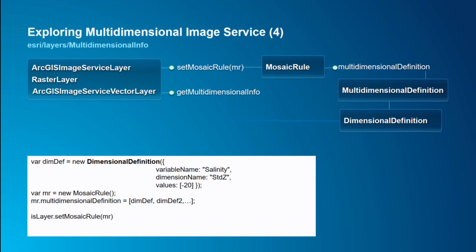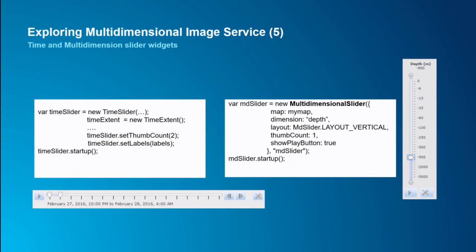The dimensional definition essentially corresponds to one mosaic rule — the image is dynamically mosaicked. You can put multiple dimensional definitions together in an array and assign it to a mosaic rule, then call the layer to set the mosaic rule, instructing the server to draw or process a particular slice or group of slices. There are also widgets in the ArcGIS API — the time slider and the multidimensional slider, which focuses on non-time dimensions like depth or elevation. It has two layout modes: vertical or horizontal.